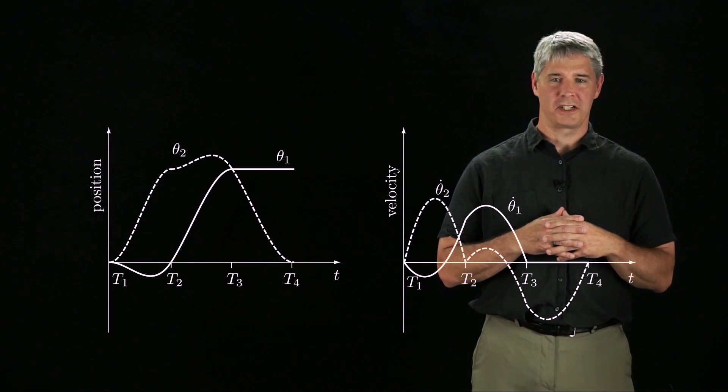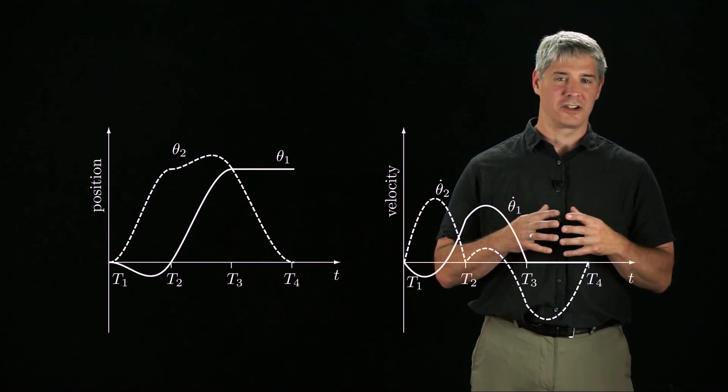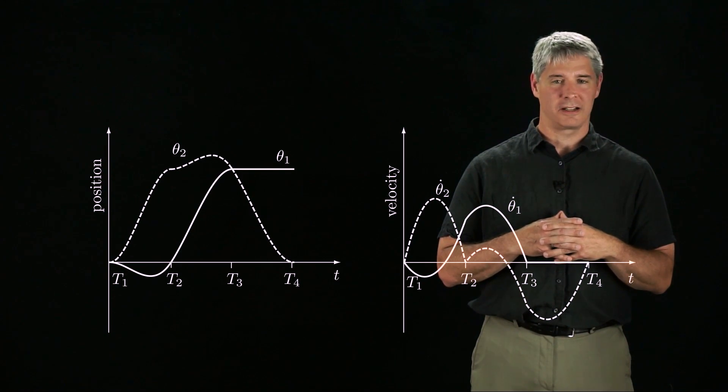These time plots show the position and velocity of each joint during the trajectory. You can see that the positions and velocities are continuous at the via points, but the acceleration is not.